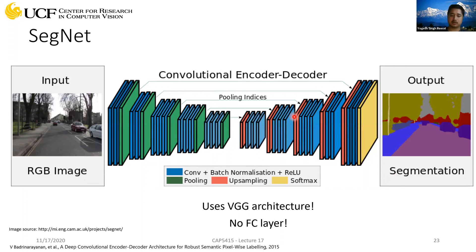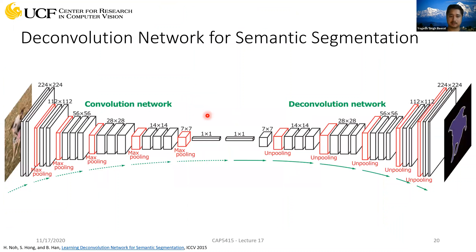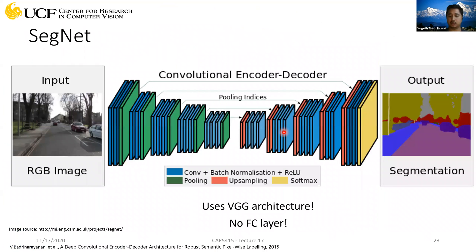The difference between SegNet and the deconvolution network discussed on the previous slide is the convolution operation. In the deconvolution network we perform deconvolution and maintain spatial resolution by trimming the padding and keeping only the center region. In SegNet, instead of deconvolution, we just use normal convolution, and we still have the unpooling layer for upsampling — passing pooling indices from max pooling to unpooling. There is also batch normalization, but the main difference is that convolution operation.